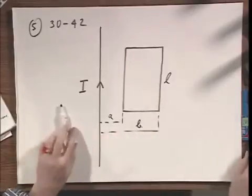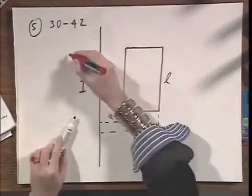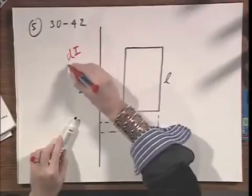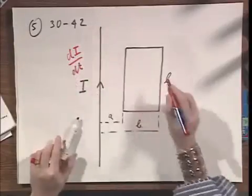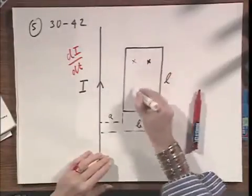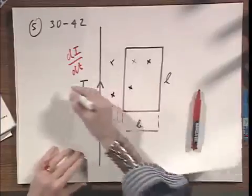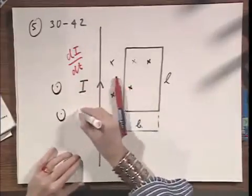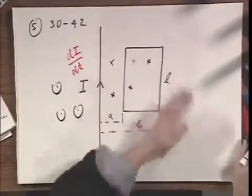and I have a changing current di dt. Well, first of all, the current I will produce a magnetic field pointing everywhere on this side in the paper, and everywhere on this side out of the paper, but we're only concerned on this side.